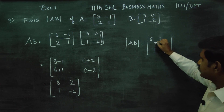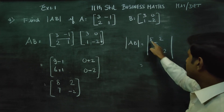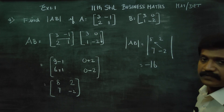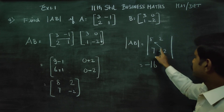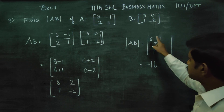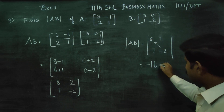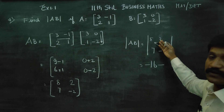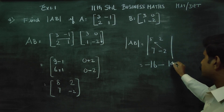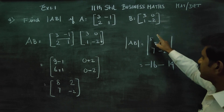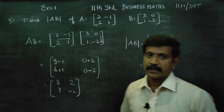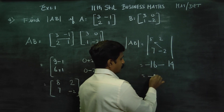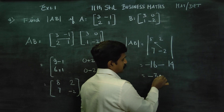Right hand side minus left hand side: 8 twos are 16, minus symbol — minus into plus minus — right hand side minus left hand side: 2 sevens are 14. Minus 16 minus 14: the answer is minus 30.